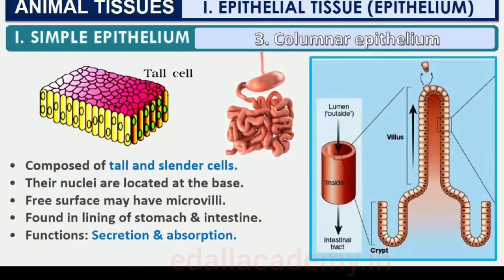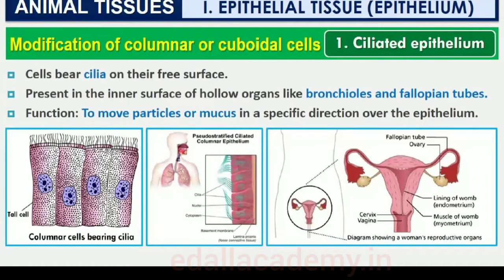If the columnar or cuboidal cells bear cilia on their free surface, they are called ciliated epithelium. Their function is to move particles or mucus in a specific direction over the epithelium. They are mainly present in the inner surface of hollow organs like bronchioles and fallopian tubes.